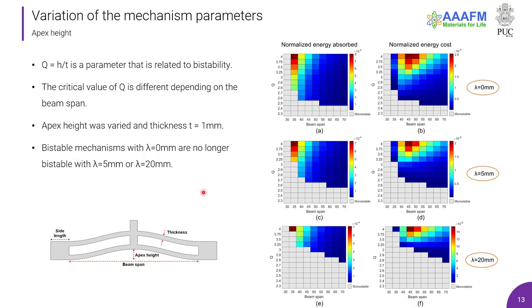Finally, the last analyzed parameter is the apex height. The value Q is the ratio between the apex height and the thickness of the beam and is related to the bistability condition. The critical value of Q also depends on the beam span. Here is a figure showing the analysis of 108 mechanisms with three values of side length: 0mm, 5mm, and 20mm. The mechanisms had varied apex height and the thickness of the beam was fixed at 1mm. Here, a good number of mechanisms were bistable, as we can see by the colored squares.